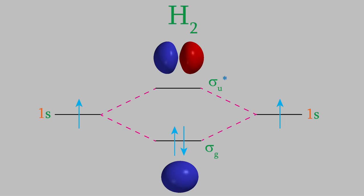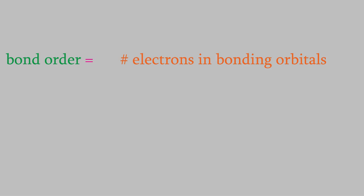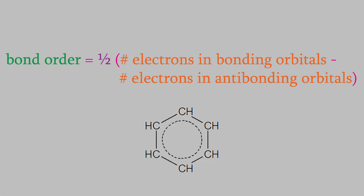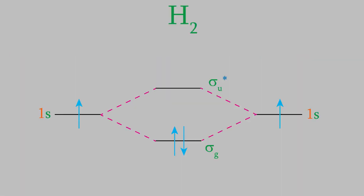It turns out that in order for a chemical bond to be stable, the atoms must share more electrons in bonding orbitals than in antibonding ones. That's certainly the case here, where there are two electrons in a bonding MO and none in an antibonding one. We can get a sense of just how stable a bond is using what's called the bond order. The bond order is given by taking the number of electrons in bonding MOs, subtracting the number in antibonding MOs, and dividing by two. For example, the hydrogen molecule has two electrons in a bonding orbital and none in an antibonding orbital, giving it a bond order of one — implying a single bond, which is indeed the case.